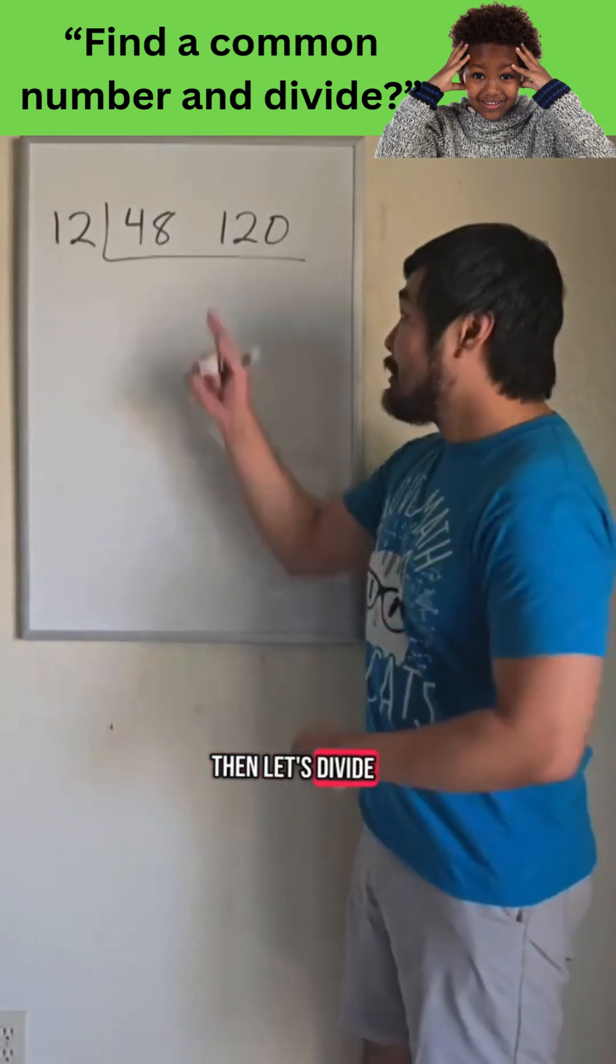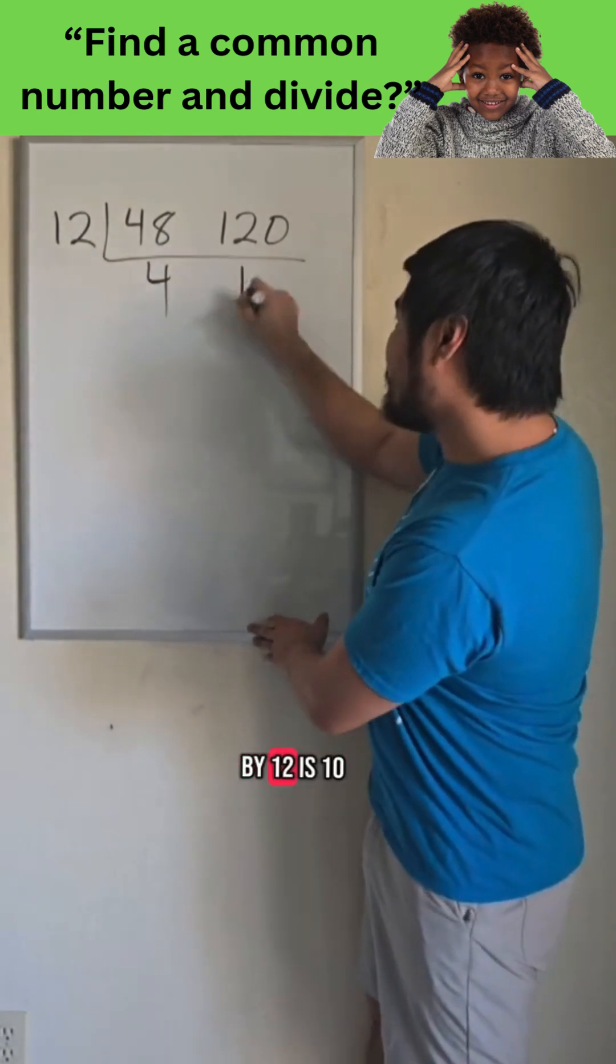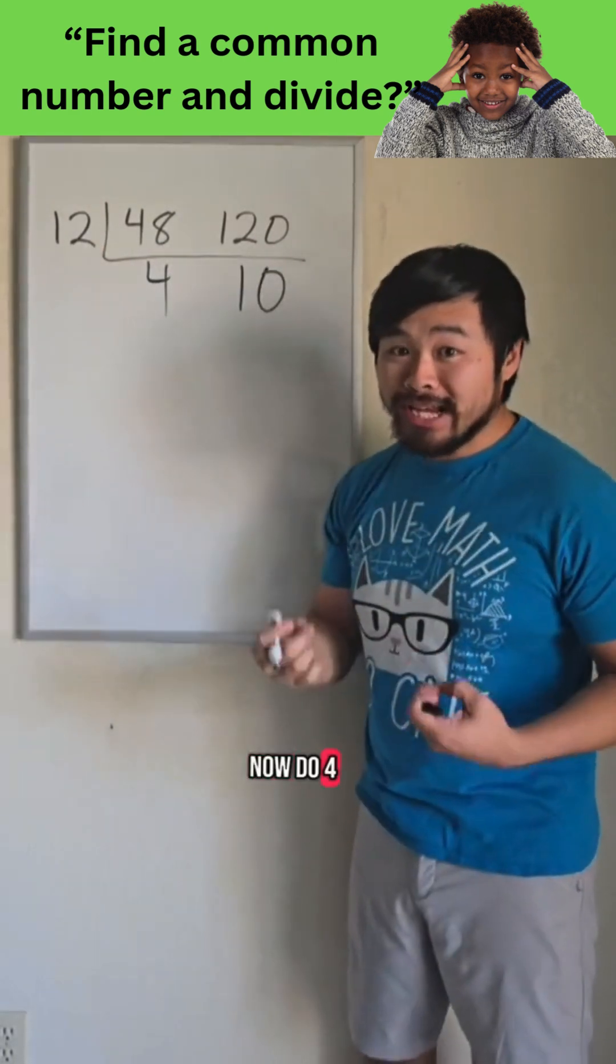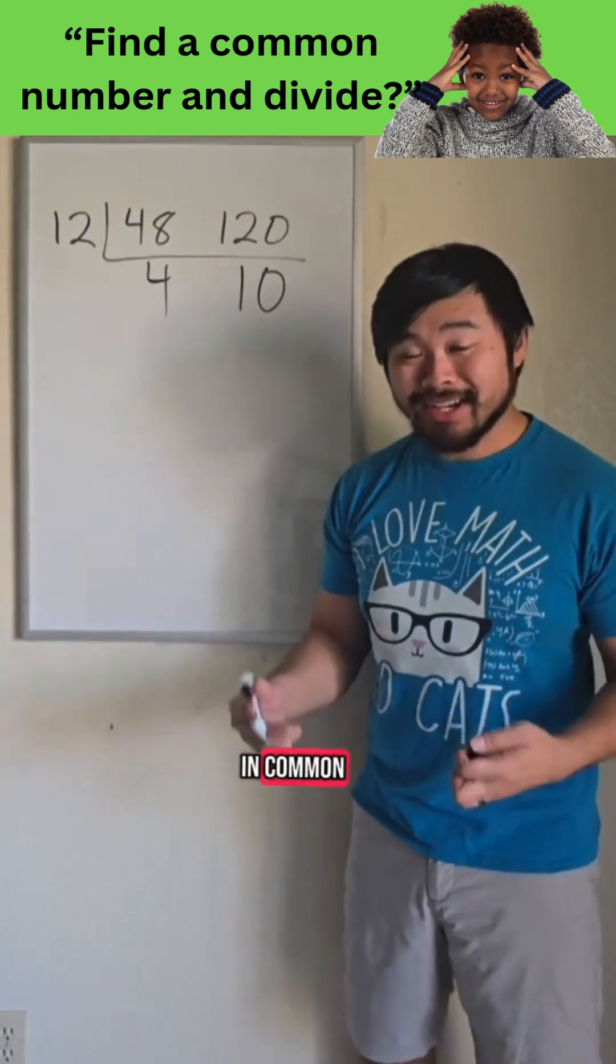Then let's divide. 48 divided by 12 is 4, and 120 divided by 12 is 10. Now, do 4 and 10 have a common factor? Well, besides 1. Yes, they have a factor of 2 in common.